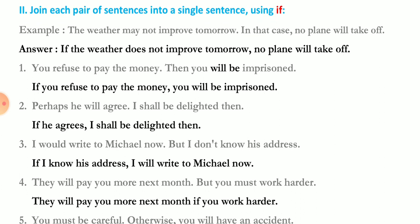'You refuse to pay the money, then you will be imprisoned' — 'If you refuse to pay the money, you will be imprisoned.' 'Perhaps he will agree; I shall be delighted then' — 'If he agrees, I shall be delighted.' Present tense in the if-clause, future in the main clause. 'I would write to Miss L now but I don't know his address' — 'If I knew his address, I would write to Miss L now.'